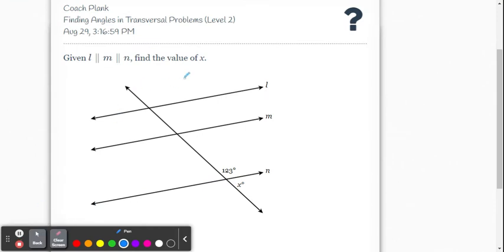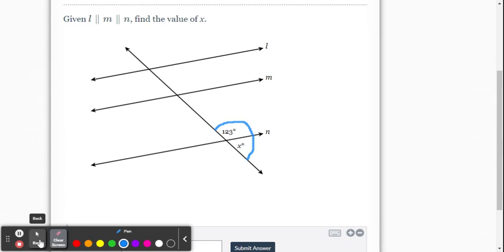Here's our next problem. So again it gives us three parallel lines cut by a transversal, but this one doesn't even use any relationships from parallel lines. It gives us right away a linear pair. So we know they add up to 180, so it's simply x plus 123 equals 180, or you just go 180 minus 123 on your calculator and you get 57 degrees. So let's just enter that in.